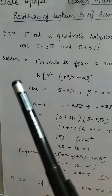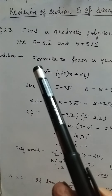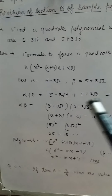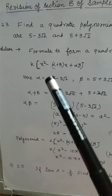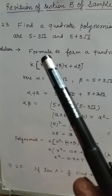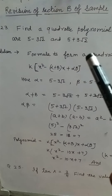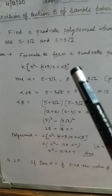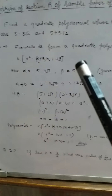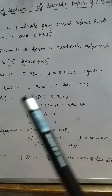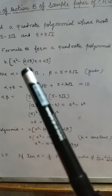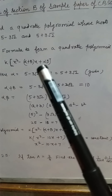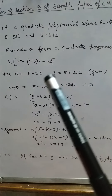In question number 23, it is given that we need to find a quadratic polynomial whose roots are 5 minus 3 root 2 and 5 plus 3 root 2. The formula to make the quadratic polynomial is k times bracket x squared minus sum of the roots times x plus product of the roots.